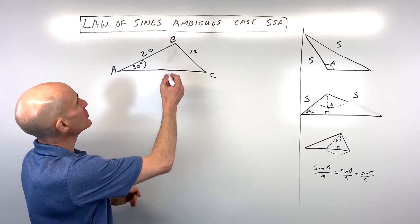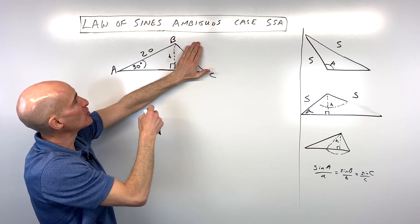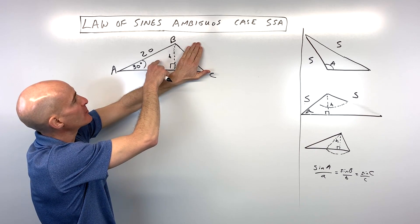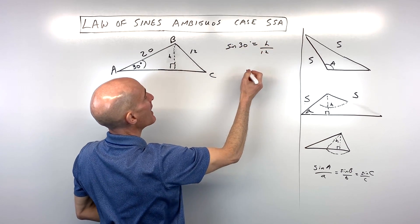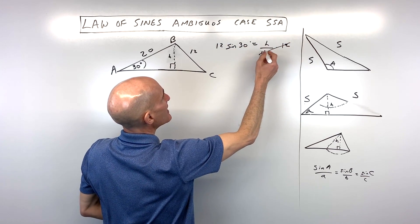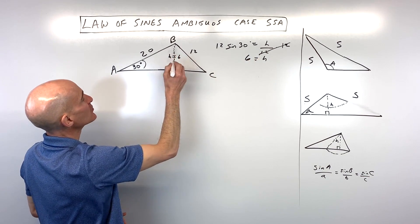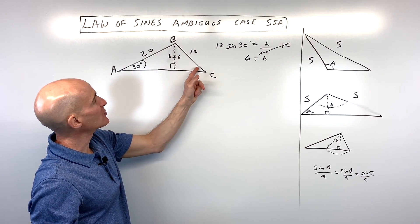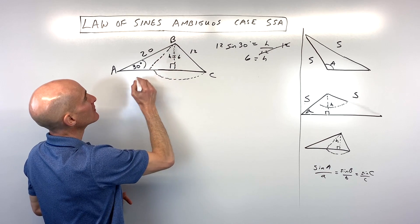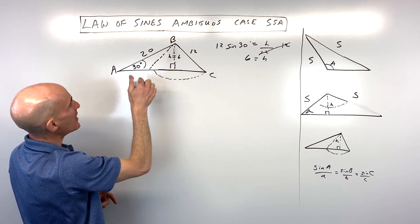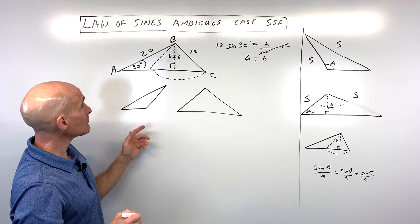So let's go ahead and look at this example. We're going to drop the altitude and call it h. Covering up one side gives us a right triangle, so we can use sine, cosine, or tangent to solve for the height. Sine of 30 equals opposite over hypotenuse. Multiplying both sides by 12: sine of 30 is one-half, times 12 is 6. So the height equals 6. Notice that the side across from the acute angle — 12 — is in between the altitude and the adjacent side, so we can rotate it to get two triangles. We can redraw them: one looks like this, and the original looks like that.